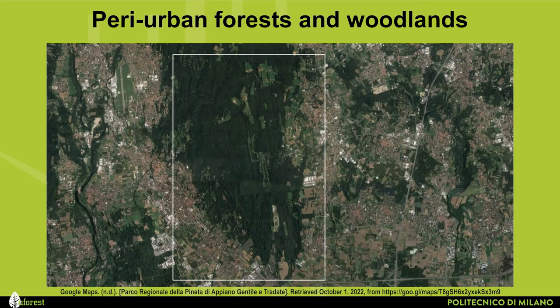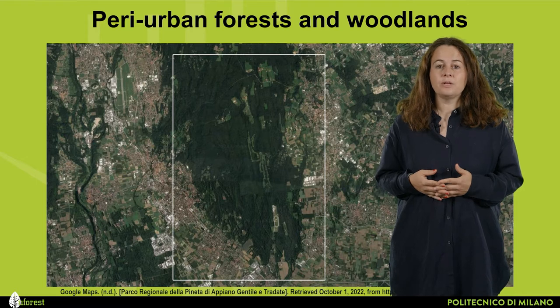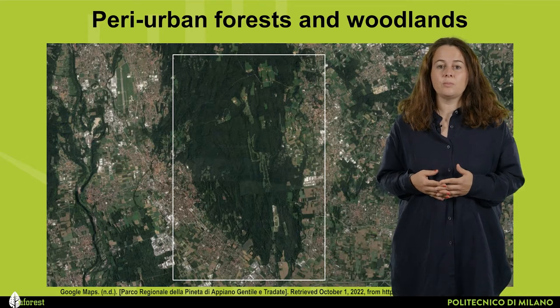To introduce these categories, I have taken a few satellite images from Milan from Google Maps. The first typology mentioned is peri-urban forests and woodlands, which include forests and woodlands surrounding towns and cities that can provide goods and services such as wood, fibre, fruits, other non-wood forest products, clean water, recreation and tourism. Here in the slide you can see the northern Milanese area with the park of Piano del Gentile surrounding the cities.